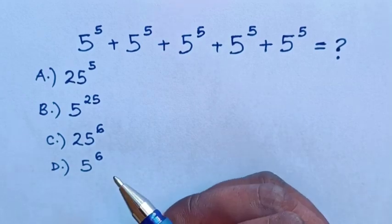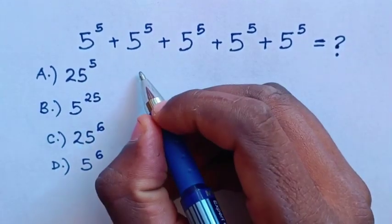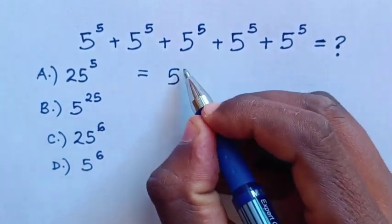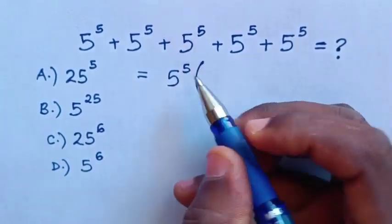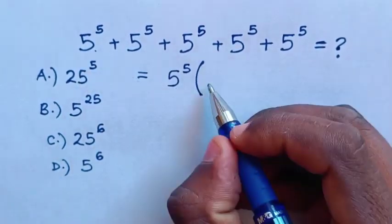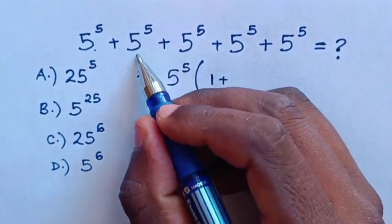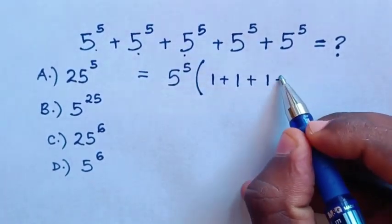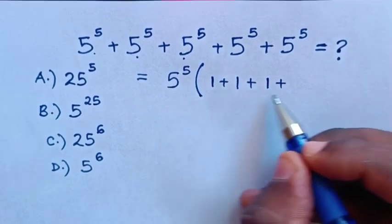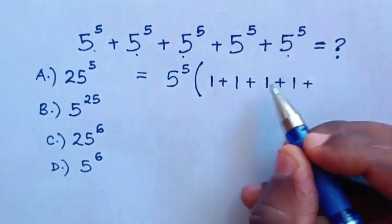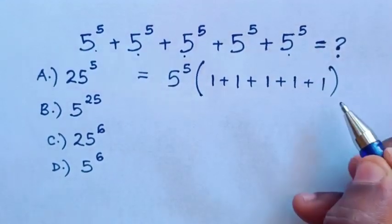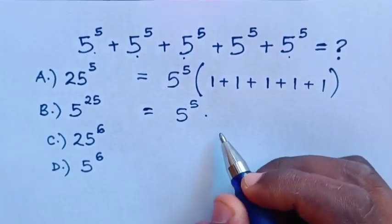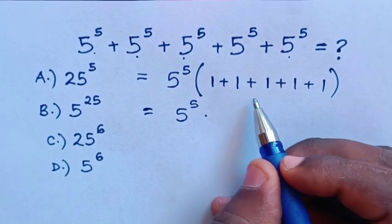This expression will be equal to — 5 power 5 is common, so we take 5 power 5 out of the bracket. Then each term divided by 5 power 5 is 1, giving us 1 plus 1 plus 1 plus 1 plus 1 inside the bracket. So this is equal to 5 power 5 times the sum inside the bracket.